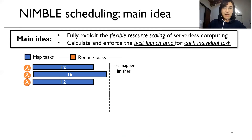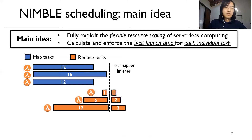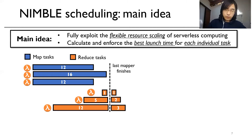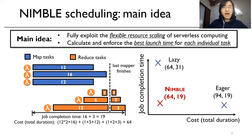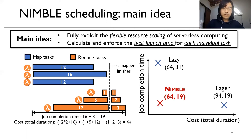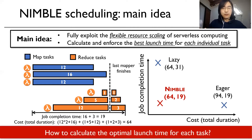Recalling the previous MapReduce example, with Nimble scheduling, reducers with heavy load can start early to minimize completion time, and reducers with light load can start late to minimize cost. By doing so, we can get a completion time as good as the eager solution, and at the same time a cost as good as the lazy solution. Following this idea, the key question is how to calculate the optimal launch time for each task.